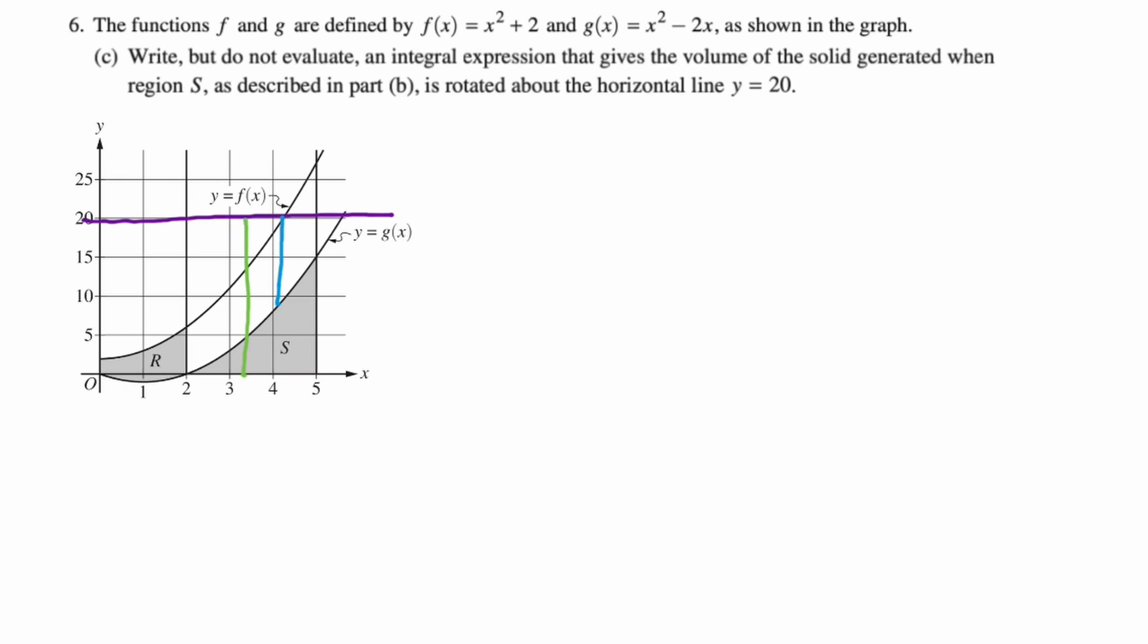So we just need to write our volume formula. So it's going to be π times the integral from two to five of the big radius squared. The big radius is just going to be 20 - 0.